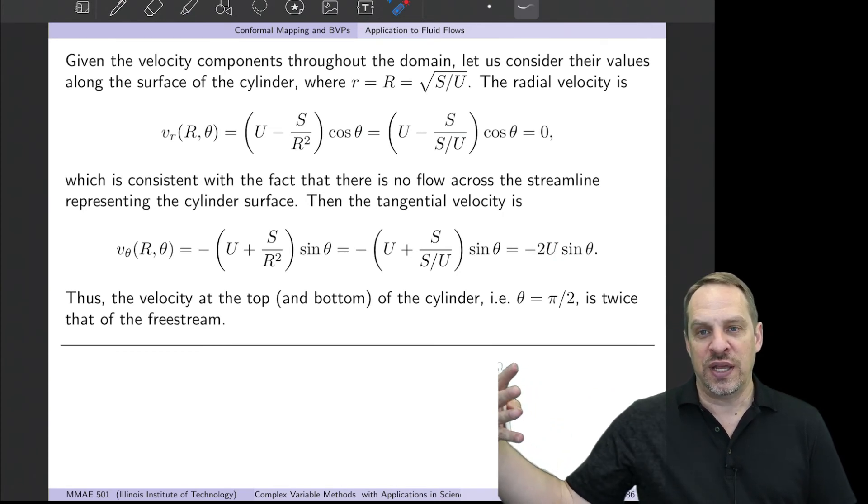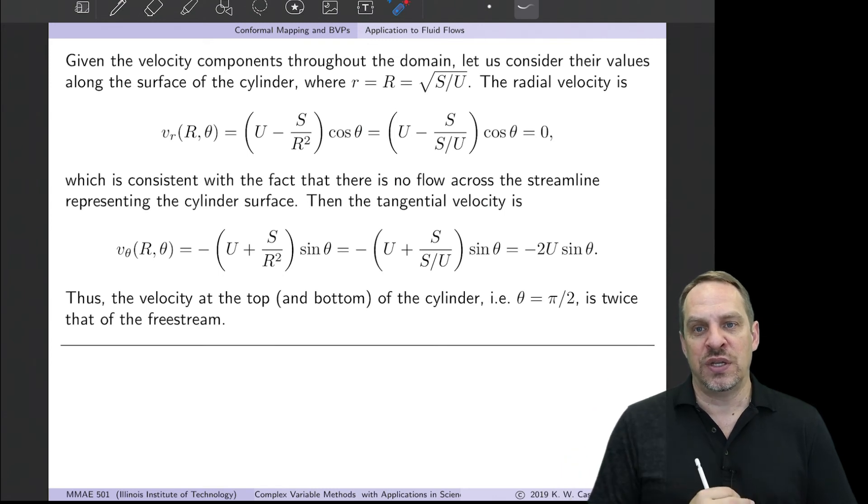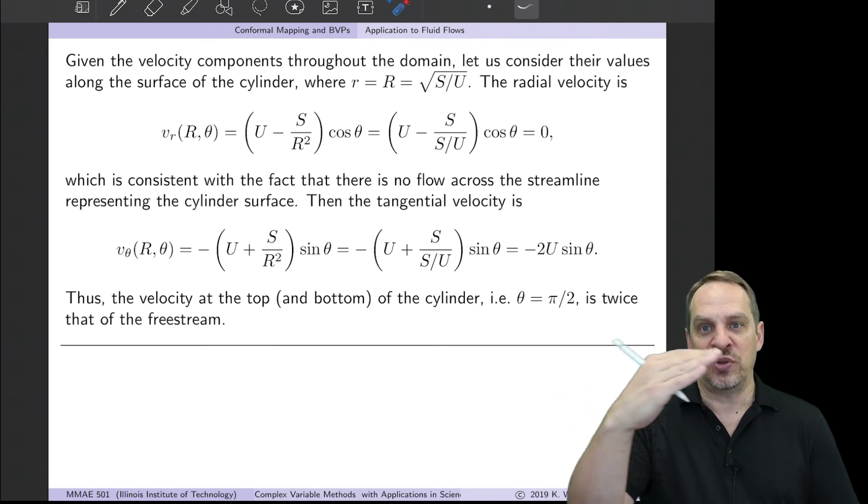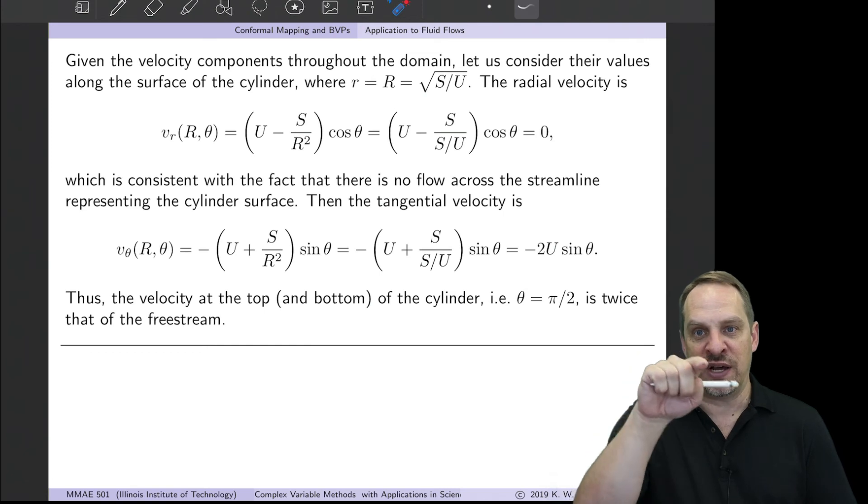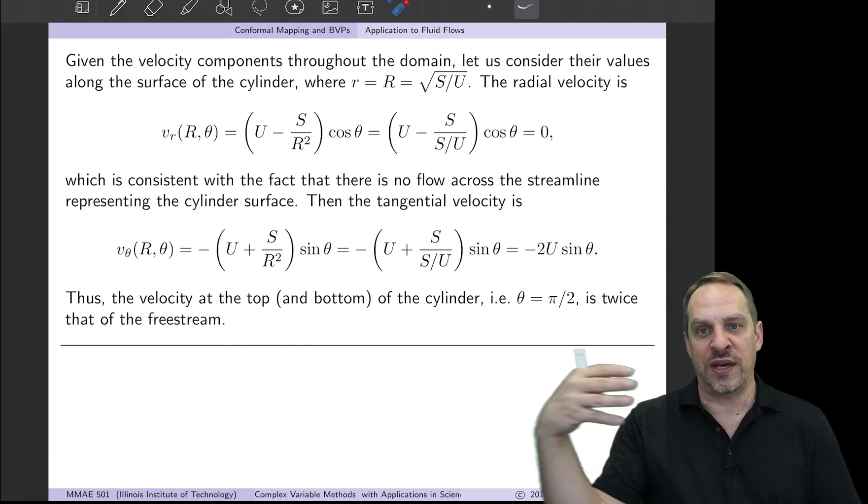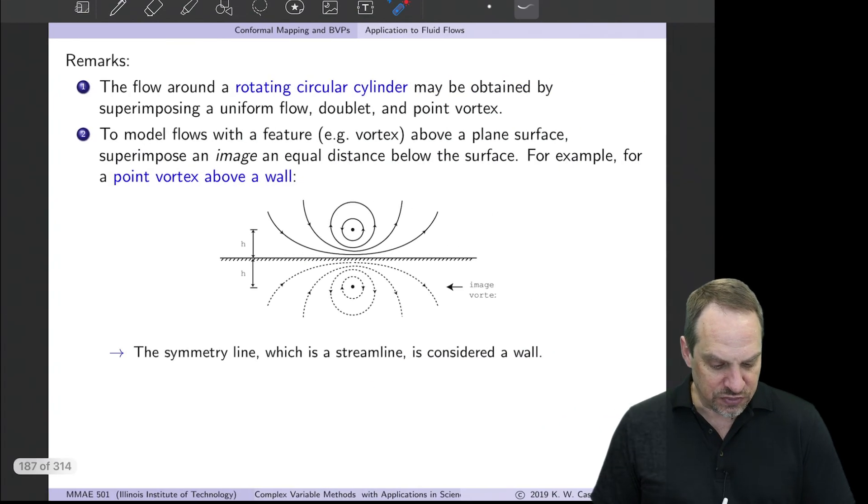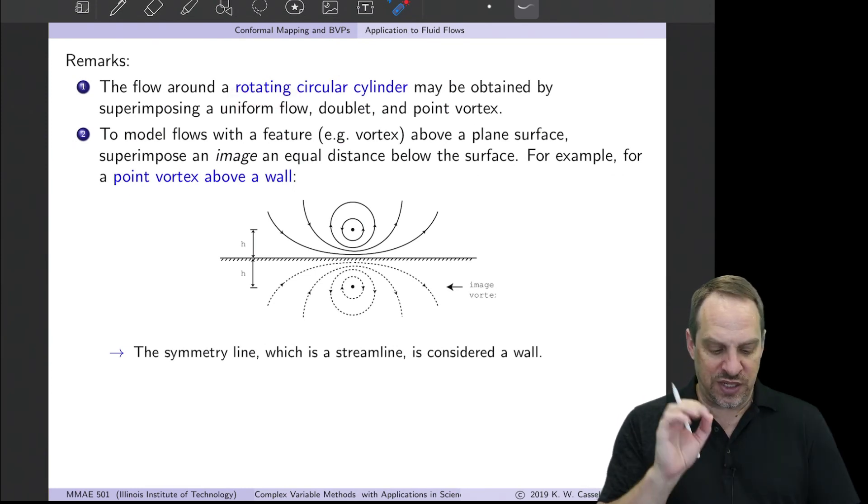So the velocity is just twice that of the uniform flow coming in. That's interesting. As the flow comes in, it hits the cylinder, has to go around it above or below. It has to accelerate to do so because of conservation of mass, and the velocity right at the top and right at the bottom of the cylinder are actually twice that of the uniform velocity coming in. We're getting all this straight from the potential flow solution.